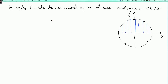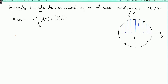By symmetry, that area is half of the total enclosed area, so I can calculate it and multiply by 2. The area is 2 times the integral. The upper half of the circle corresponds to t going from 0 to pi. But we need a minus sign because the curve is going to the left. So it's minus 2 times the integral from 0 to pi of y of t times x prime of t dt. With y of t equal to sine t and x prime equal to minus sine t.